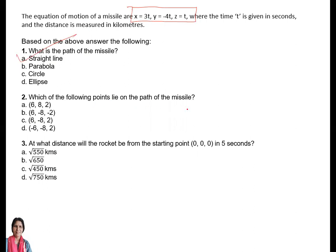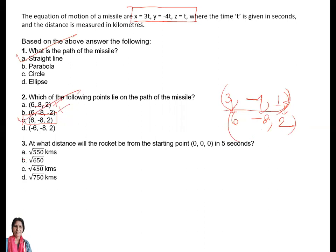Second question: which of the following points lie on the path of the missile — which point satisfies this equation? If I check x = 6, t should be equal for each case. The direction ratios are 3, -4, and 1. You have to see whose ratio corresponds to this. For t = 2: 3×2 = 6, -4×2 = -8, 1×2 = 2. So (6, -8, 2) is the answer. C is the answer to this question.